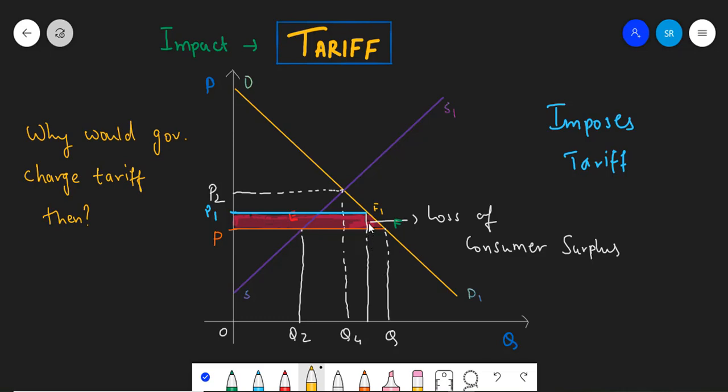This decreased consumer surplus is absorbed in the economy in different ways. Firstly, because of the increased tariff, there will be an increase in government revenue. As one can see, after the tariffs are imposed, OQ3 is the domestic supply and Q3Q1 is the international supply.